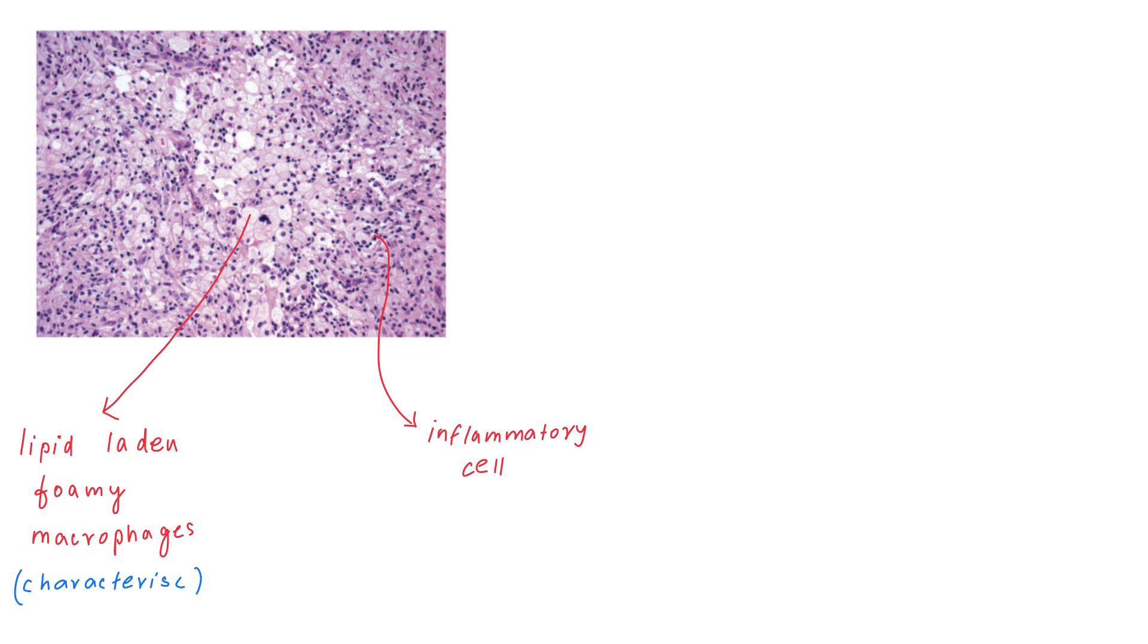However, there is another entity called clear cell renal cell carcinoma. Histopathology of clear cell RCC also shows lipid-laden foamy macrophages, so in a frozen section it is often difficult to distinguish between the two entities. This can lead to unnecessary radical nephrectomy.